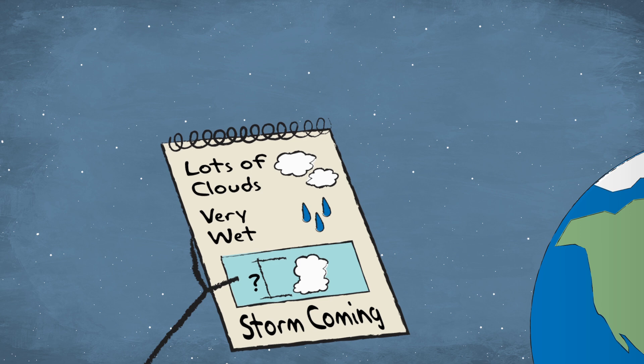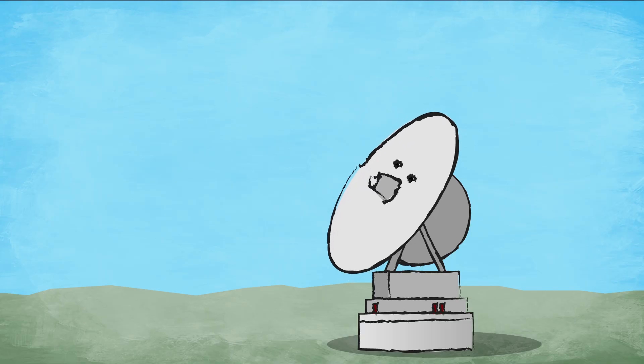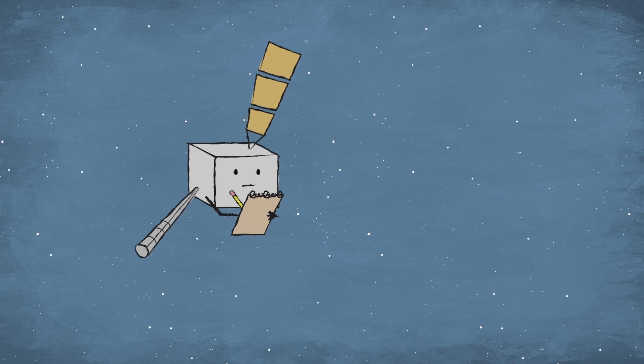But I can't keep all of this information to myself. I have to share it with weather forecasters down on Earth. A big antenna is waiting for my call. Since I'm a satellite, I send my pictures and notes in a computer language of ones and zeros.